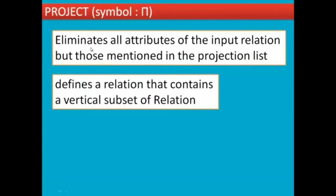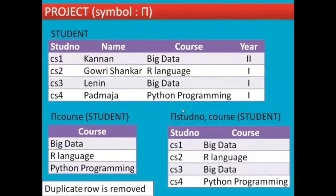The next one is PROJECT. Project symbol is pi. It eliminates all the attributes of the input relations except those mentioned in the projection list. This is vertical ordering. For example, student in the table, pi course of student. The first output is Big Data. If it repeats, the duplicate is removed, so we get Big Data, R language, and Python programming.